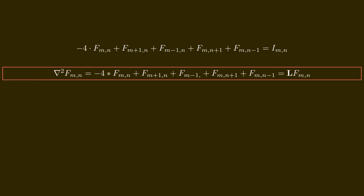This equation is the discrete Laplacian. It is used, for example, in computer graphics to do edge detection. If there is a region in your image where the color only changes very slowly, the difference between the middle point and its neighbors will be mostly zero. But if there is an edge where the brightness or color changes rapidly, this operation will give a high value. The nabla-squared symbol used here is the same symbol used for the continuous case, where we have a differential equation instead of a difference equation.